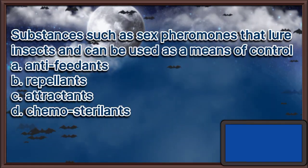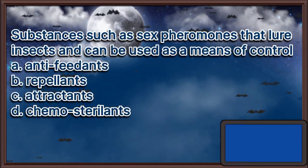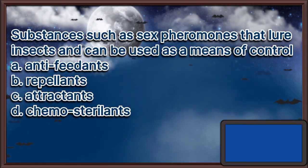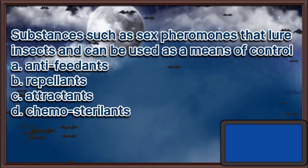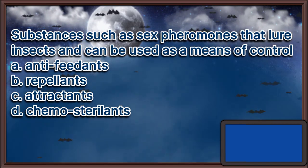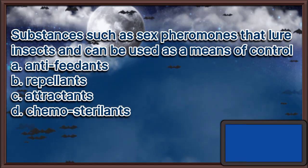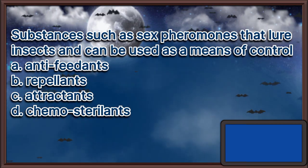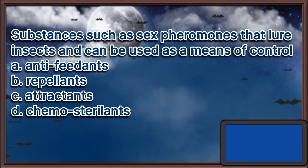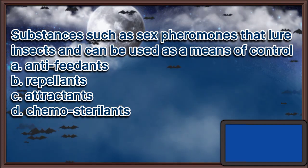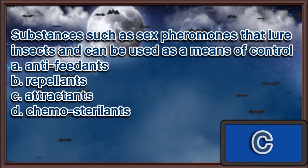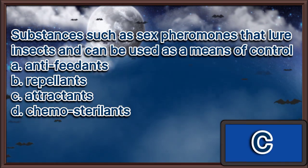Substances such as sex pheromones that lure insects and can be used as a means of control. A. Antifeedants. B. Repellants. C. Attractants. D. Chemosterilants. The answer is letter C.